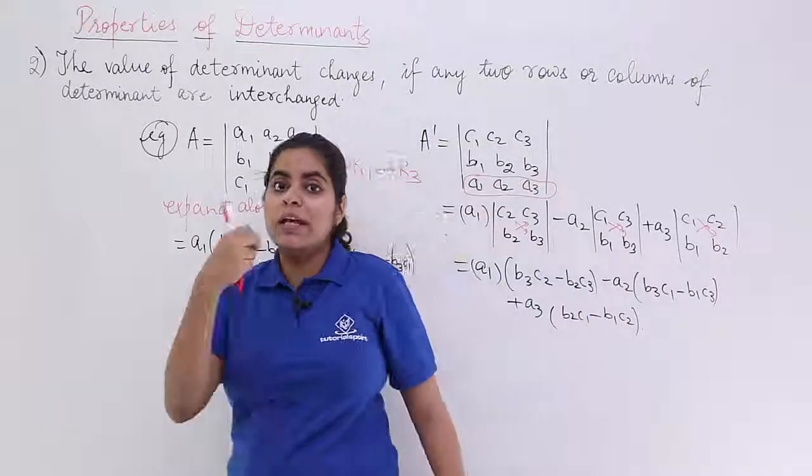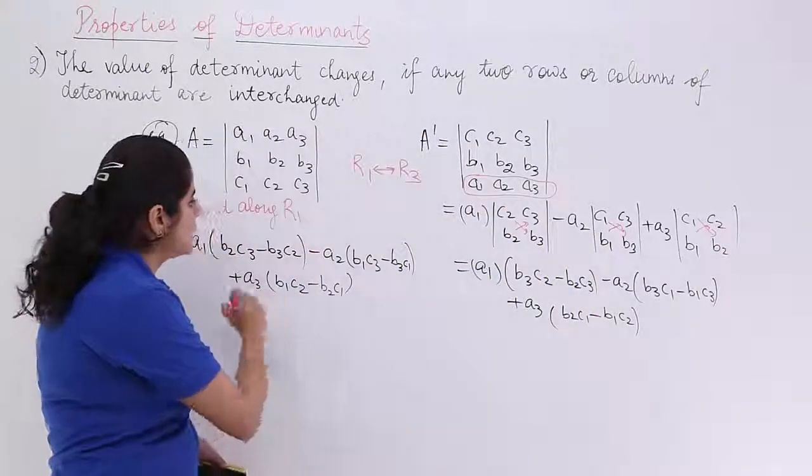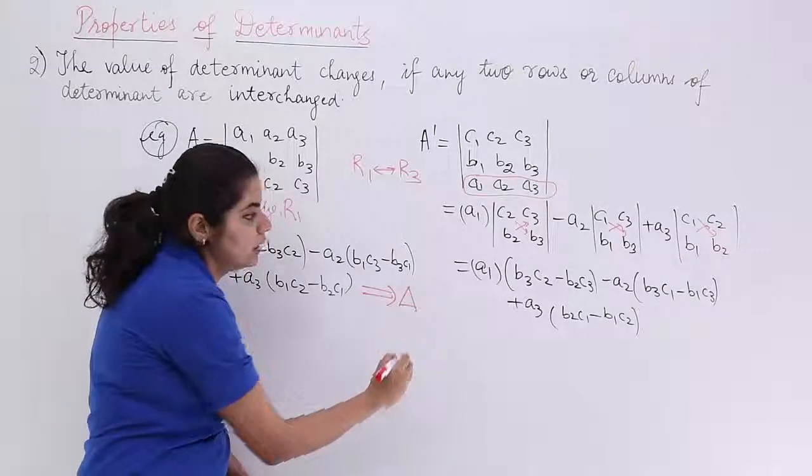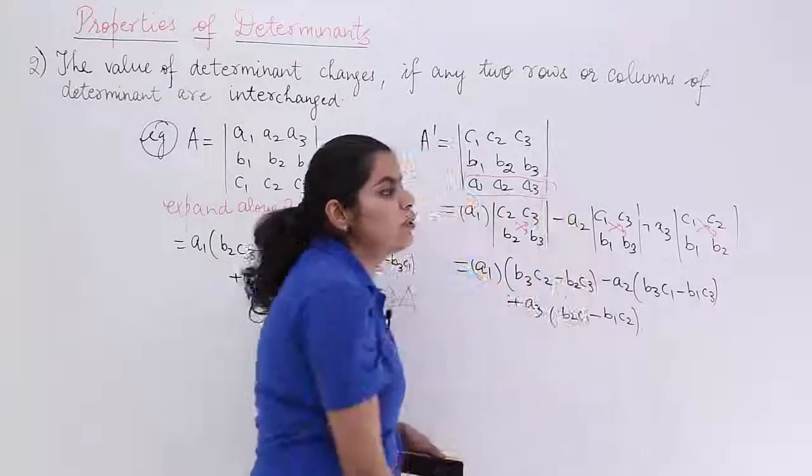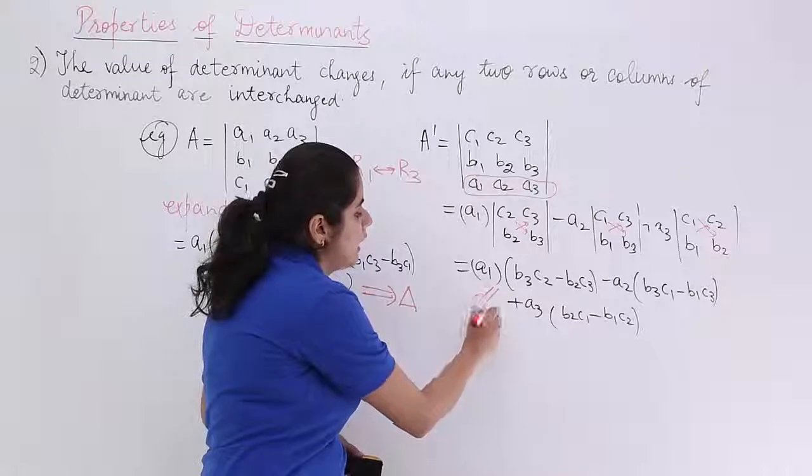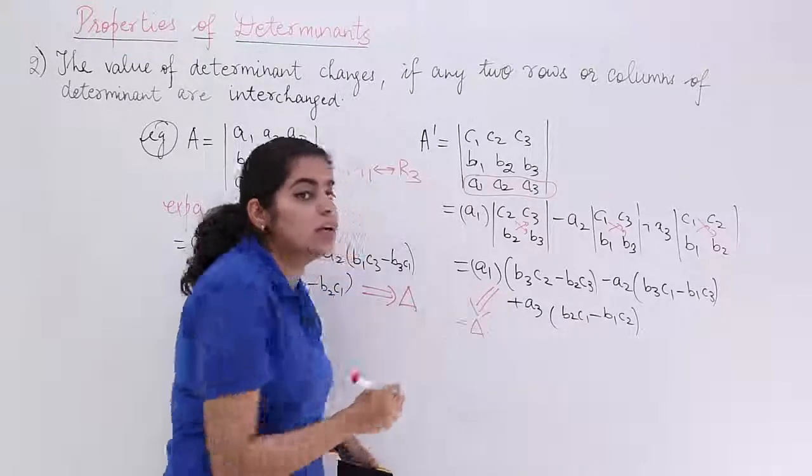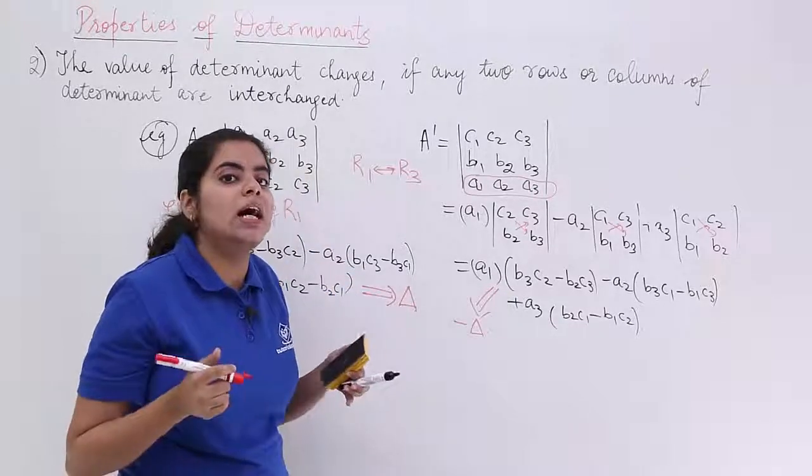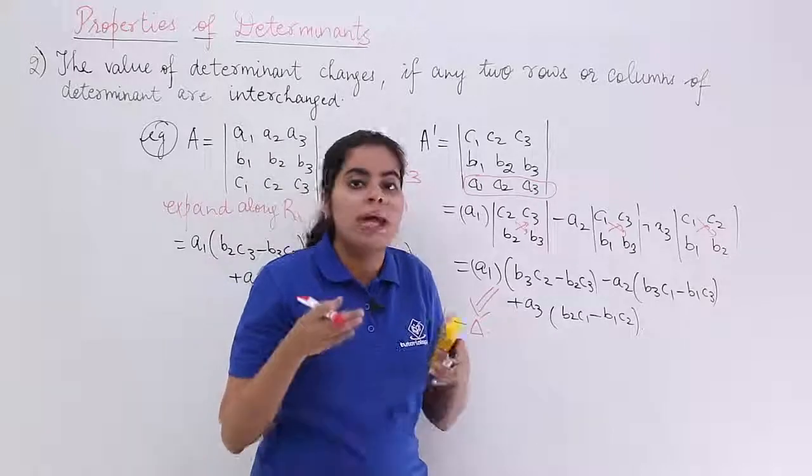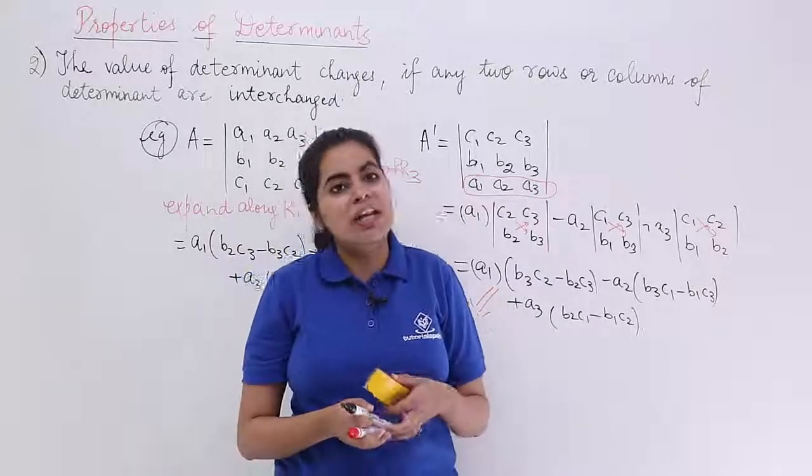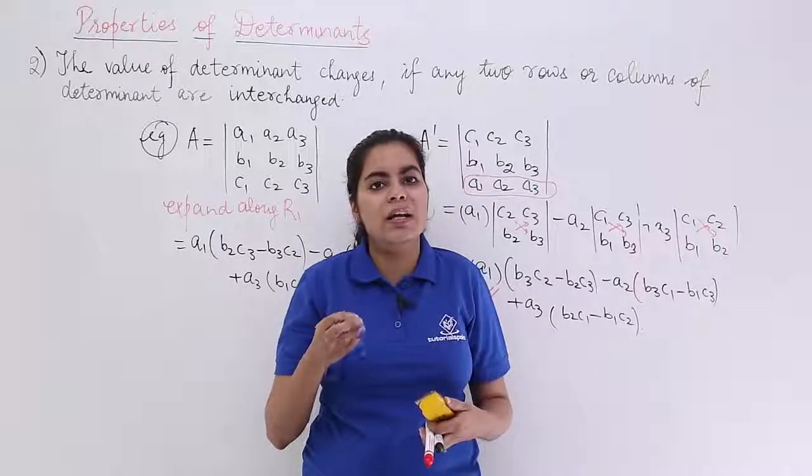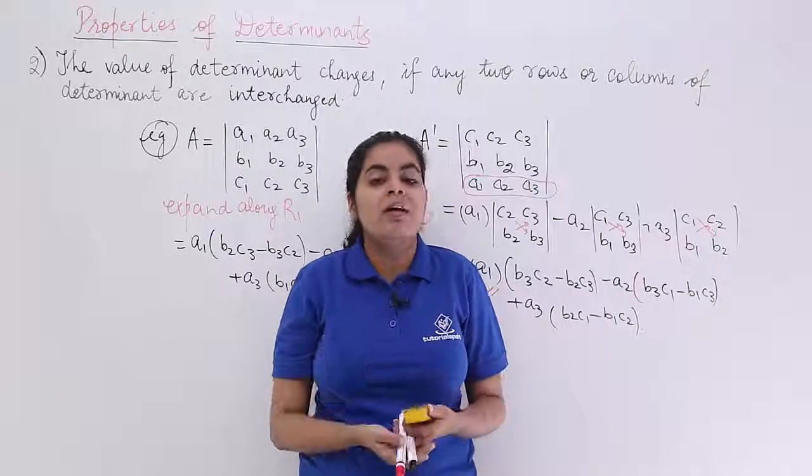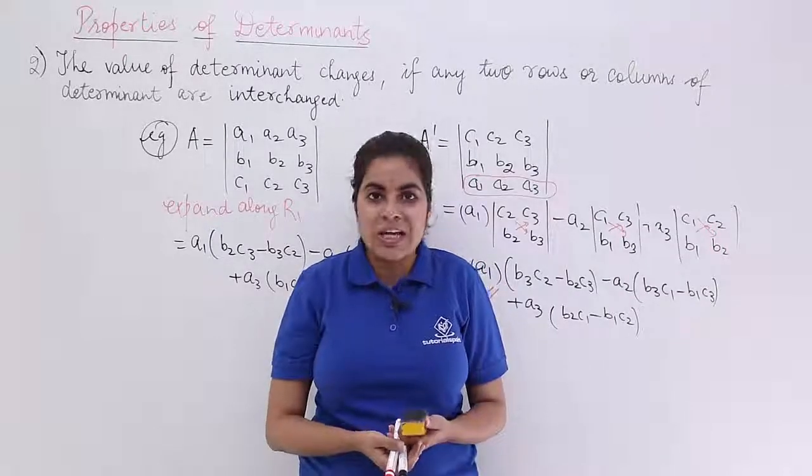So that means negative sign can be taken common. If this value that you are obtaining is named as del, this whole value that you obtain here can be named as minus del. Because the only difference is of the sign. You can take minus sign common. Hence proved that if any two rows or any two columns of a determinant are interchanged, then the value of determinant changes.